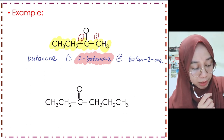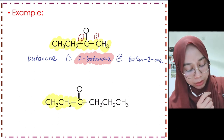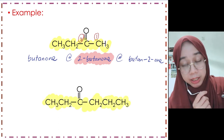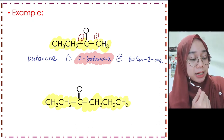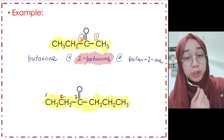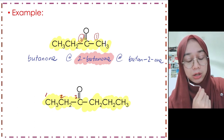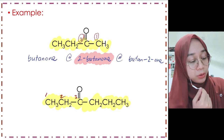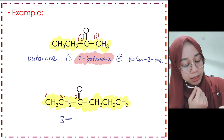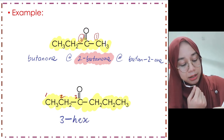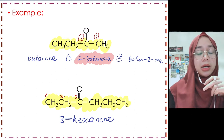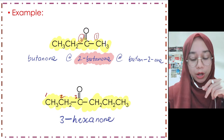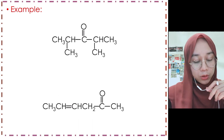For the second ketone example, a straight chain with no substituents: numbering from the left gives C=O at position 3, whereas from the right it would be position 4. So we start from the left. With six carbons, the name is '3-hexanone' — we must specify the position of the carbonyl group.